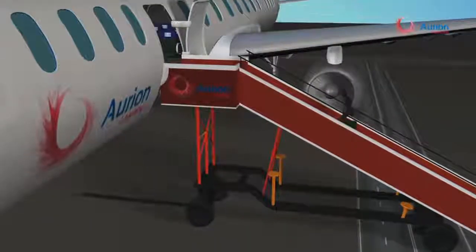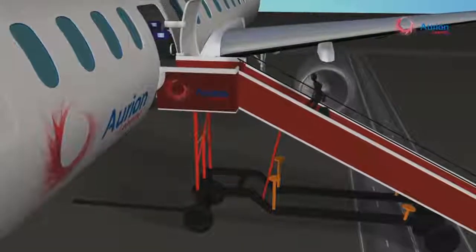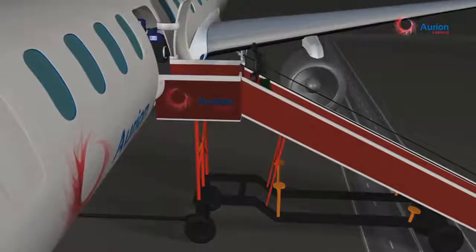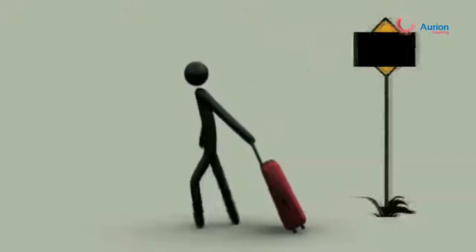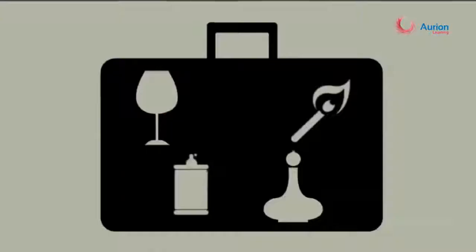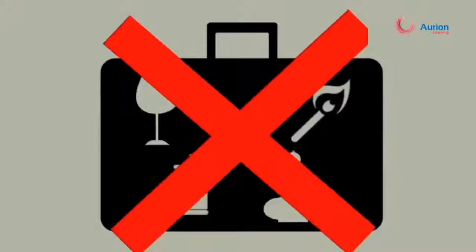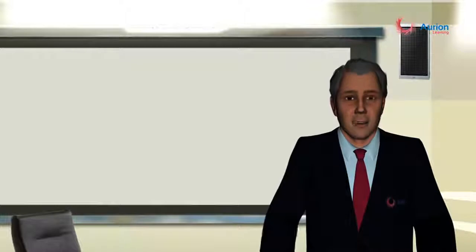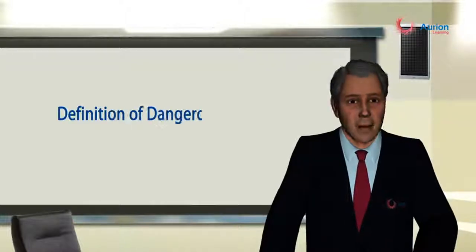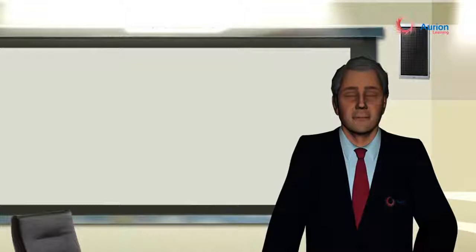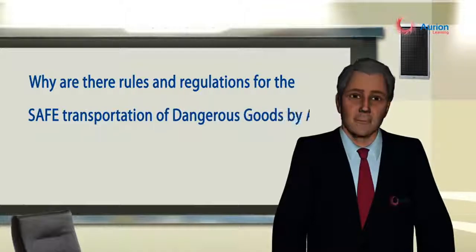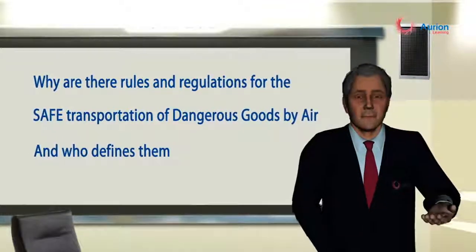Now that we are aware of the hazards and risks of dangerous goods, I am certain we shall be more careful and vigilant in handling them. However, our passengers may not be aware of the dangers and may unknowingly carry dangerous goods in hand luggage or checked-in baggage. Hence, we need to spread awareness amongst our passengers about dangerous goods through signages, posters, pamphlets and tickets. In this module we have learned the definition of dangerous goods, why there are rules and regulations for the safe transportation of dangerous goods by air, and who defines them. Thank you.